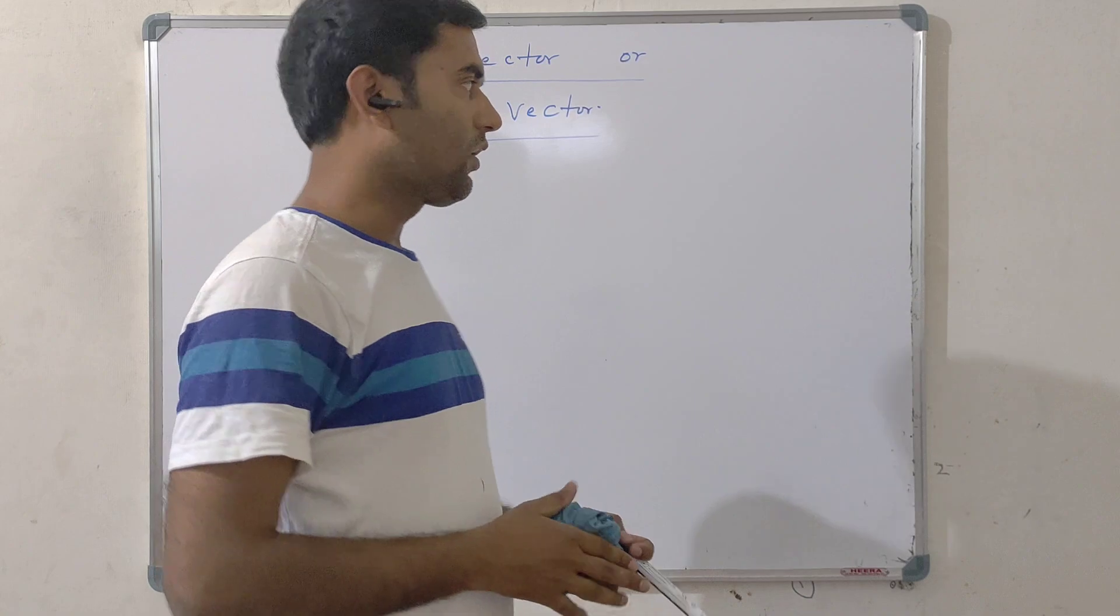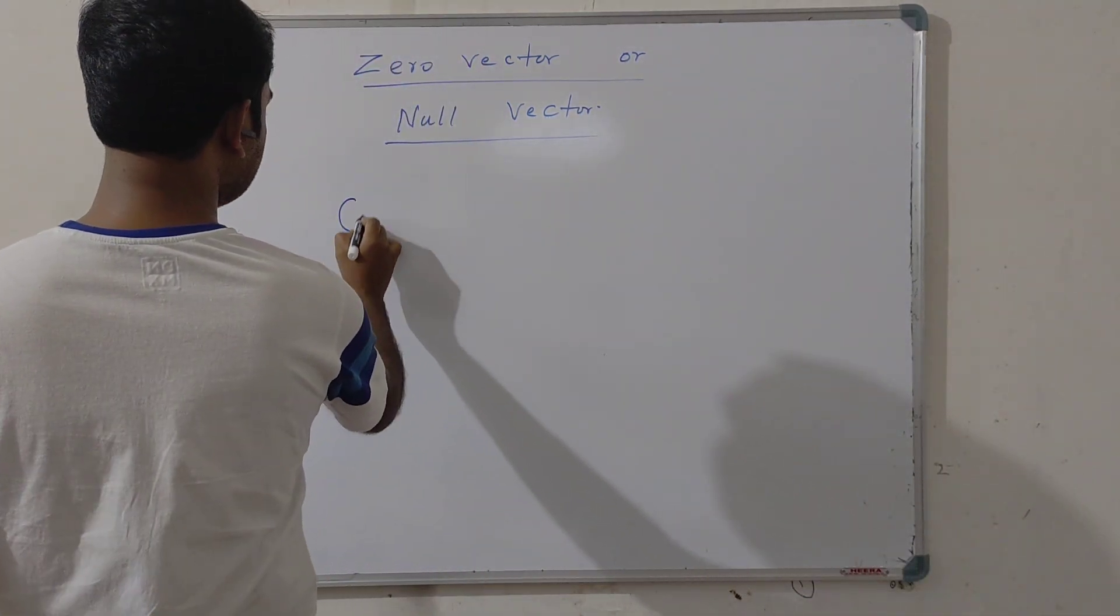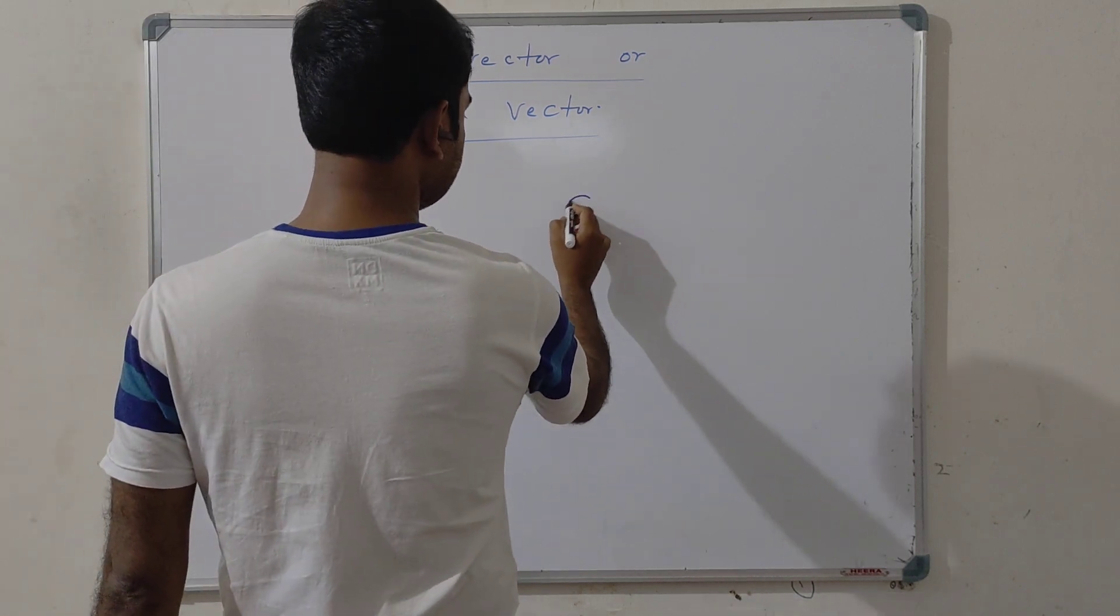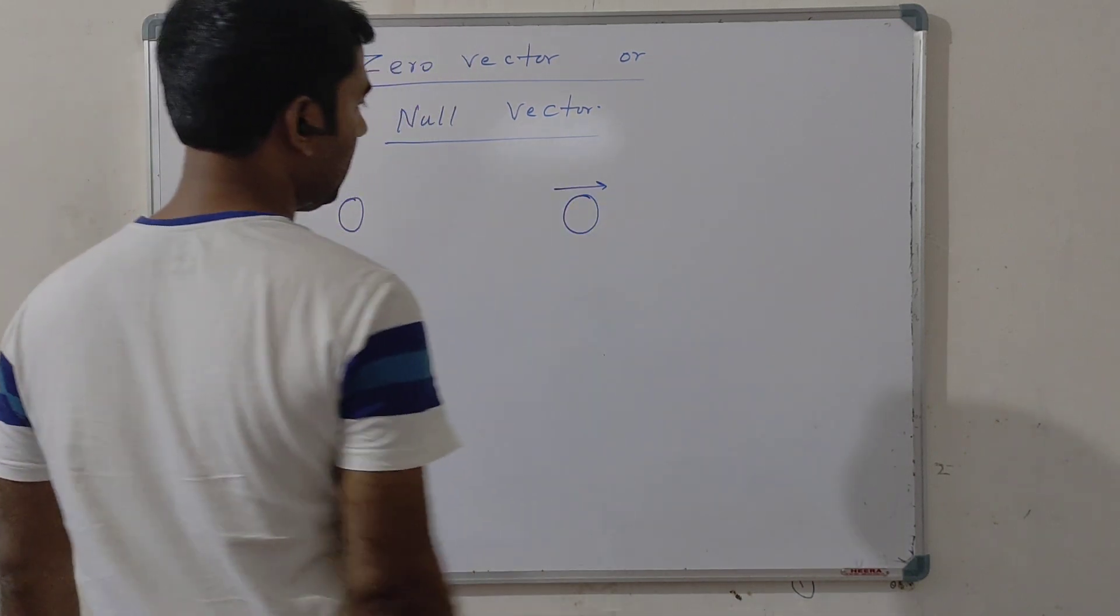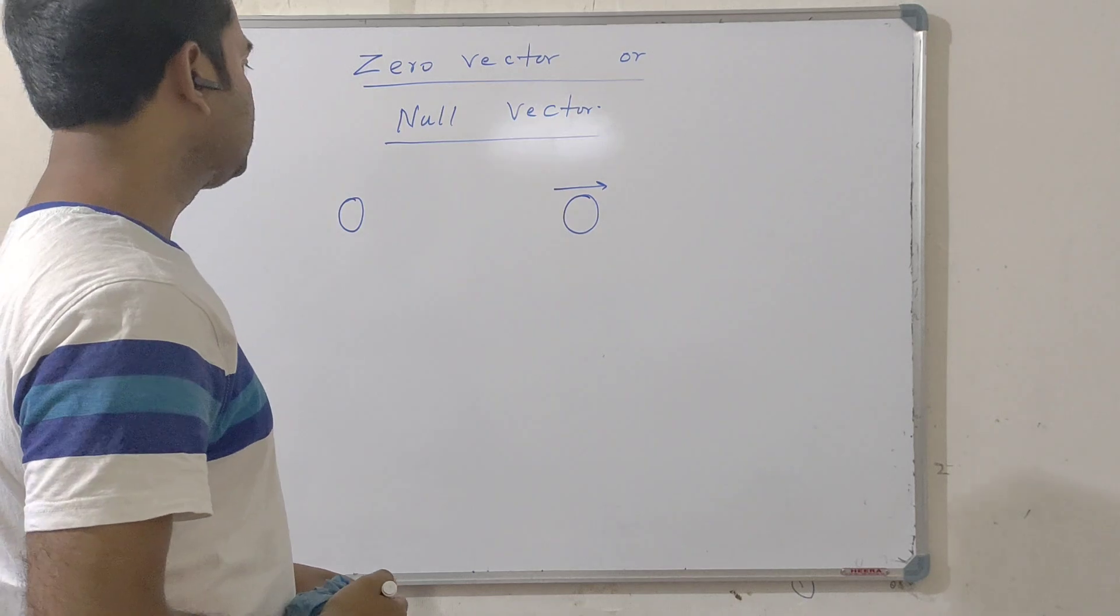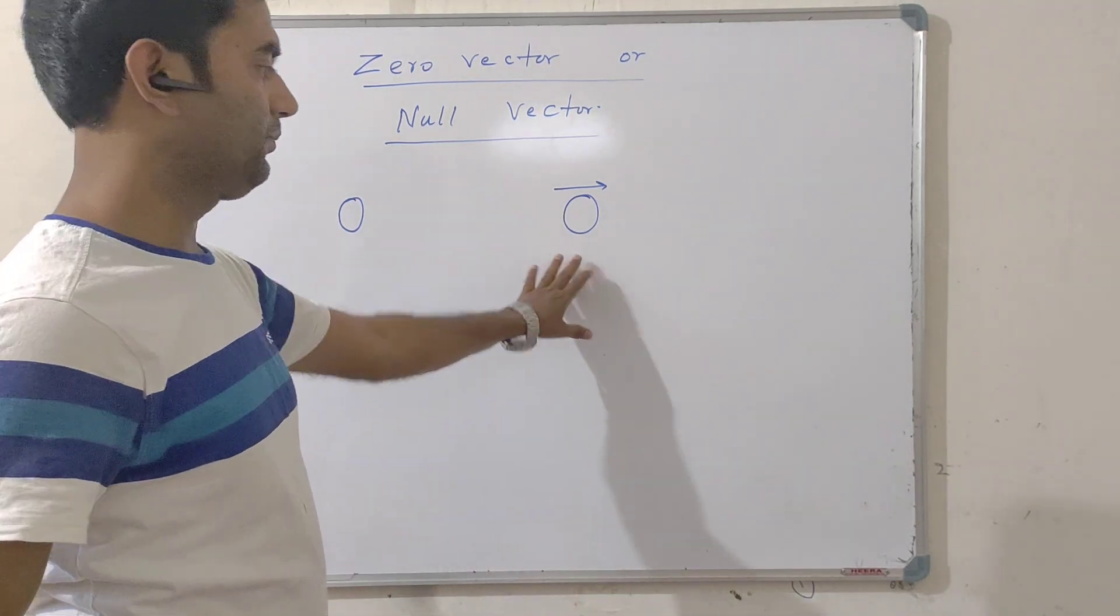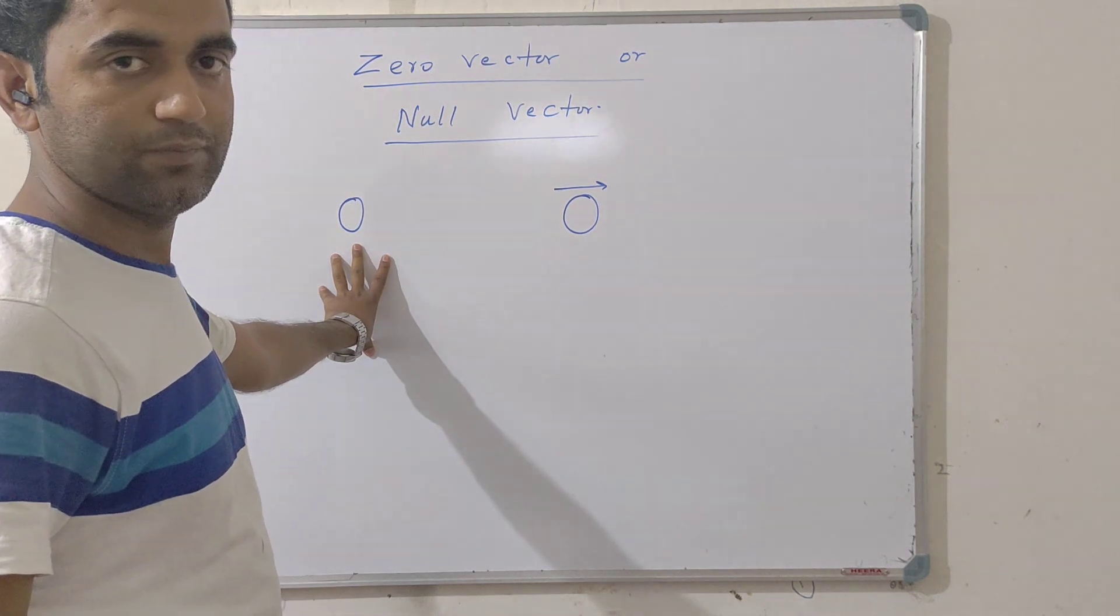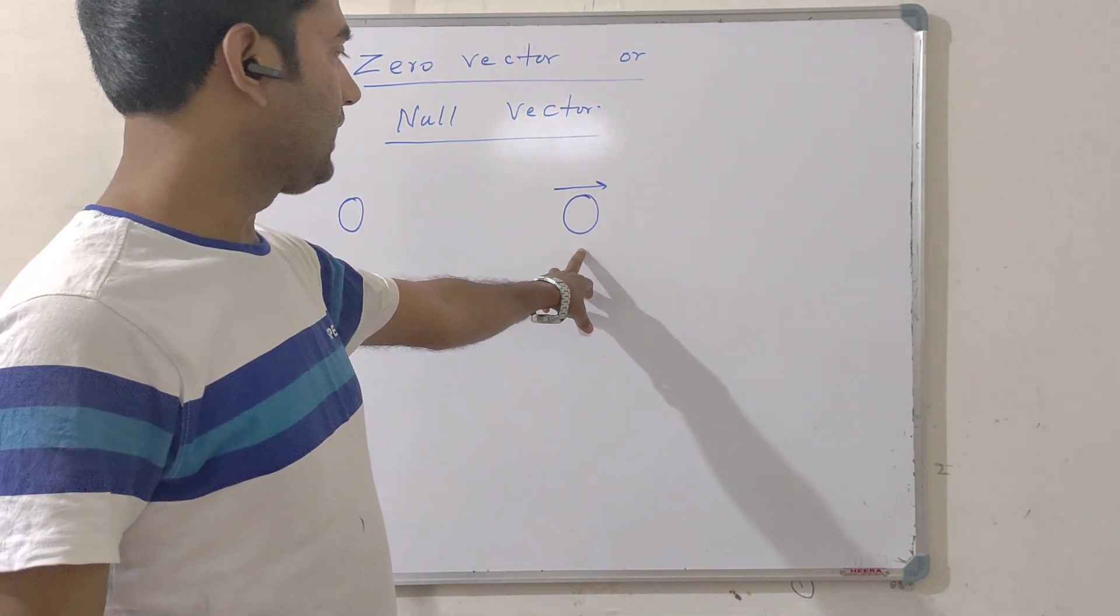Let us consider two zeros. One zero is simply represented like this and another zero is represented like this. What is the basic difference between this zero and this zero? This zero is actually a scalar zero and this zero is a vector zero.